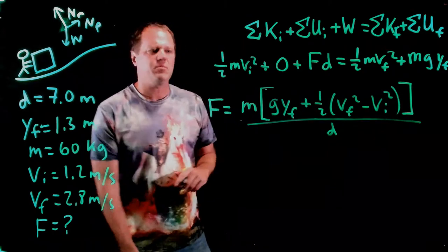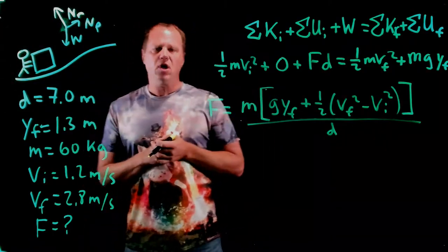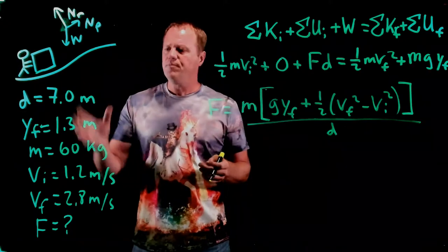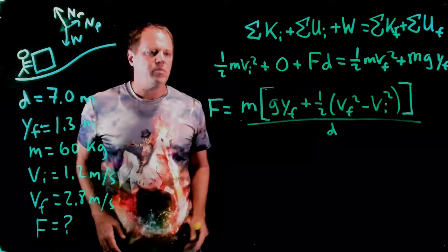Okay, so it doesn't simplify too much. But we can go ahead and throw, we've got a symbolic solution for the force in terms of things that we know. So we just need to chuck these numbers in, plus the known value for g, and we'll be done.